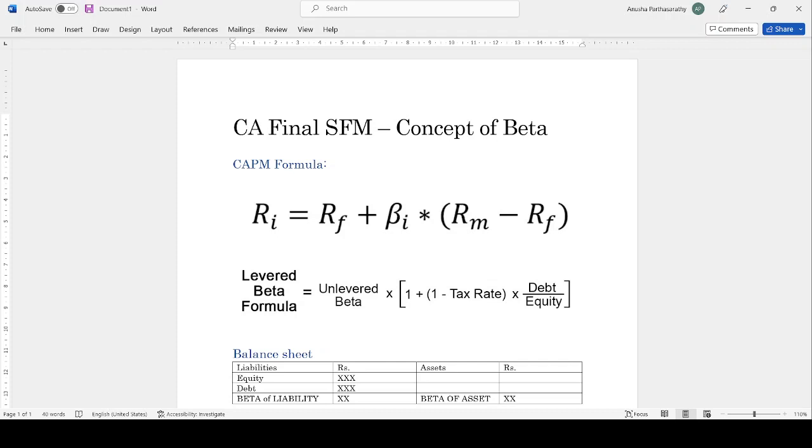We have the CAPM formula which states that Ri equals Rf plus beta times Rm minus Rf. Ri is the expected return, Rf is the risk-free return, Rm is the market rate of return, beta i is the beta of the security, and Rm minus Rf gives the market risk premium.